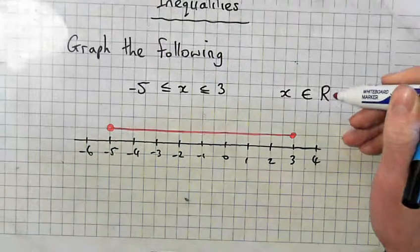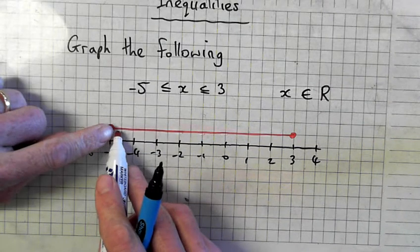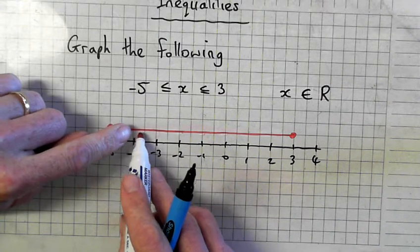So R. Remember, real numbers means every decimal that you can think of, every fraction, everything in between.